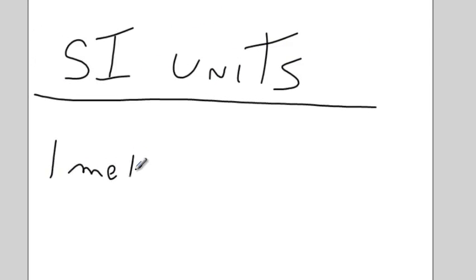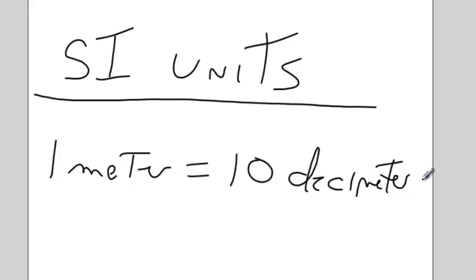1 meter is 10 decimeters. Those are two different ways of saying the same thing, that 1 decimeter is 0.1 meter, or 1 meter is 10 decimeters. Either way you want to remember it, it's the same way, but be consistent.